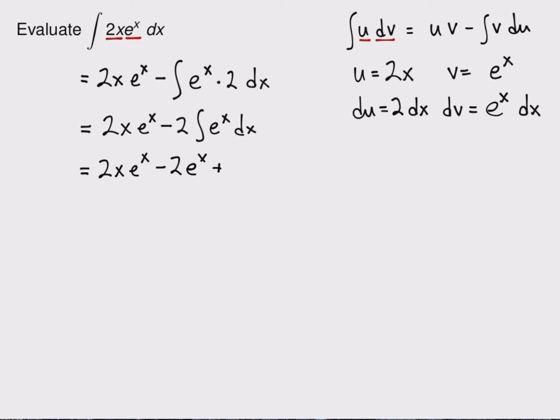So I get 2x e to the x minus 2 times e to the x. And here is where the plus c comes in. Because now that I've taken the antiderivative, I need the general antiderivative. And this is my general antiderivative for 2x e to the x. It's 2x e to the x again minus 2 e to the x plus a constant.